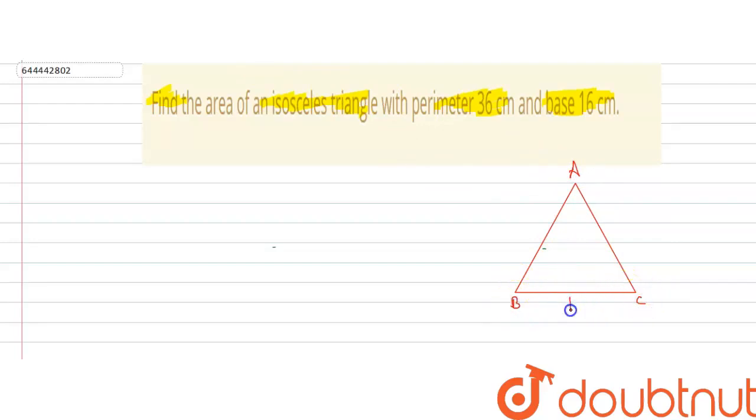Given that the base is 16cm, let this side be A and this side also will be A because these sides are equal since it is an isosceles triangle.